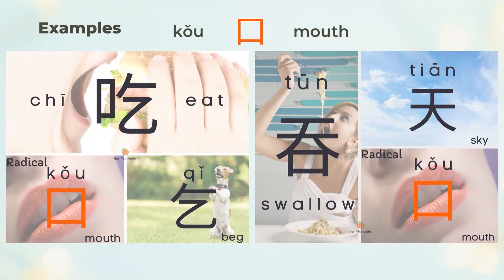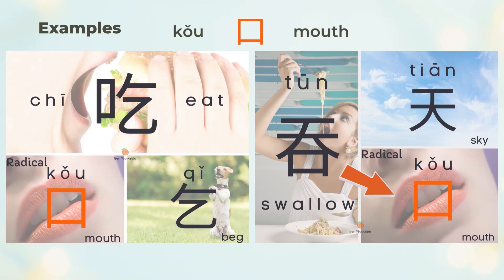吃 means to eat. 吃 is the left 口 (mouth) and the right 乞 (to beg). When you crave food, your mouth wants to eat. 吞 means to swallow. 吞 is the top 天 (sky) and the bottom 口 (mouth). 吞 is to look at the sky and swallow.